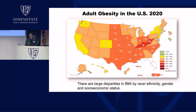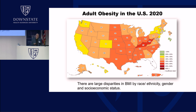You've probably all seen maps like this produced by the CDC. This is the most recent one I could find for 2020 — the map of the prevalence of obesity in America for adults. You see a lot of red and orange. The reds and oranges are areas where 30 to 40% of adults have reported a BMI in the obesity range. Hidden within these maps are tremendous disparities by race, ethnicity, and socioeconomic status.